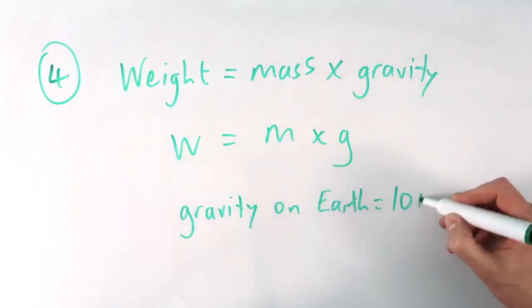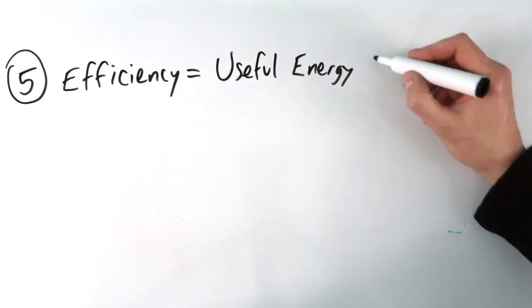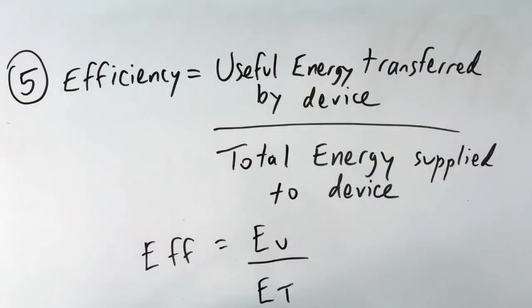Four, weight equals mass times gravity. Five, efficiency equals useful energy transferred by the device divided by total energy supplied to the device.